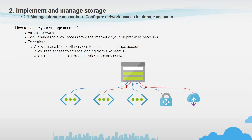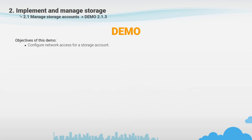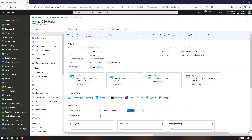A good approach to secure your storage account is to configure a rule to deny traffic from all networks, including internet traffic. Then configure rules that grant access to traffic from specific subnets pointed to your storage account. You can also configure rules to grant access from public internet IP address ranges, enabling connections from your local data center or branch office. You can add up to 100 virtual network rules and combine firewall rules for specific virtual networks and public IP address ranges on the same storage account.